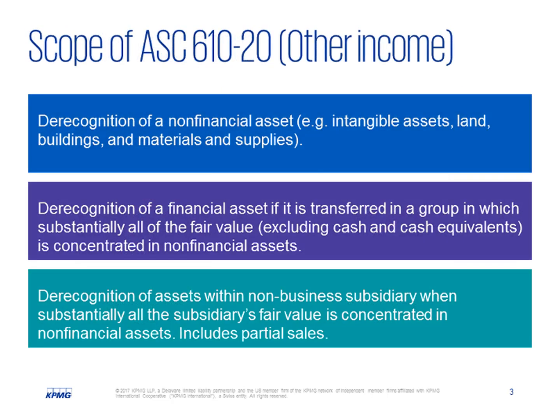Sure, Sam. The new standard clarified the scope of subtopic 610-20 so that entities will apply its guidance to both transfers of non-financial assets as well as each distinct asset in a group of assets or subsidiary in which substantially all the fair value is concentrated in non-financial assets. Non-financial assets include intangible assets, land, buildings, and materials and supplies. The ASU defines an in-substance non-financial asset as financial assets such as a receivable included in a contract or consolidated subsidiary in which substantially all of the fair value is concentrated in non-financial assets.